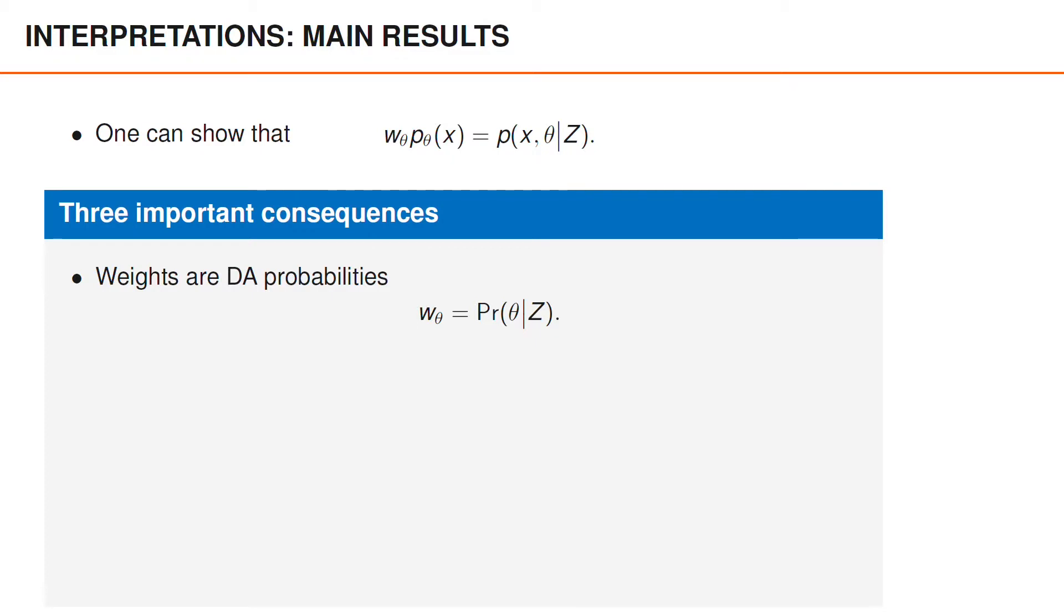First, if we integrate over x on both sides of this equation, the left-hand side becomes Wθ, since Pθ is a PDF as a function of x, whereas the right-hand side becomes the probability of θ given z. That is, Wθ is the posterior probability of the data association hypothesis θ.